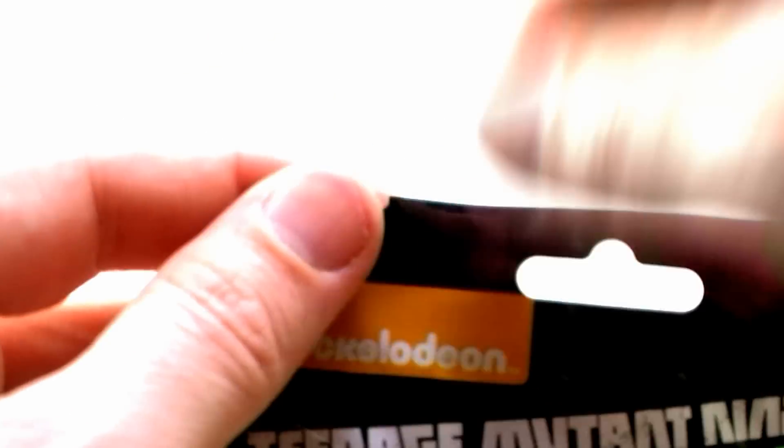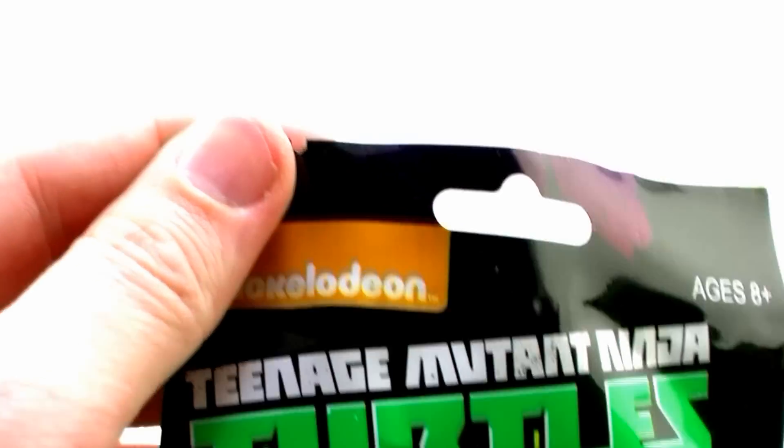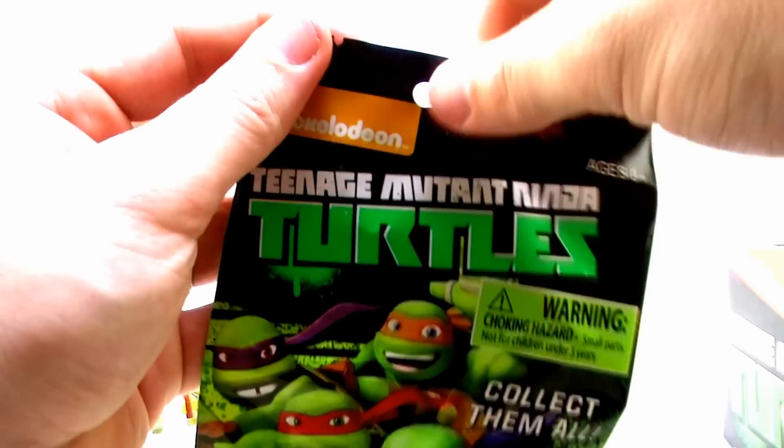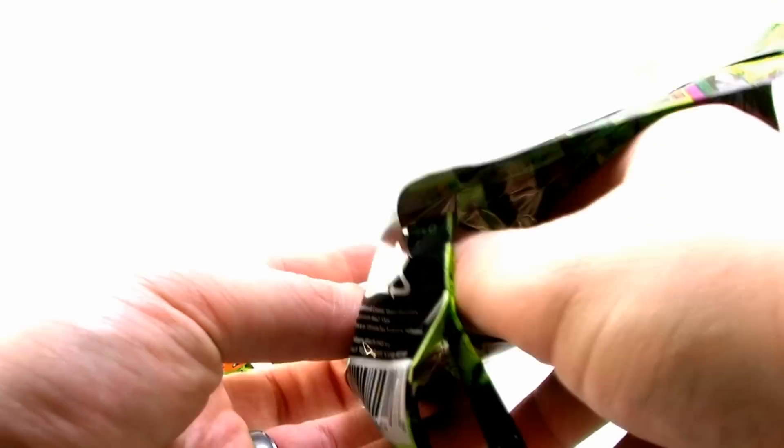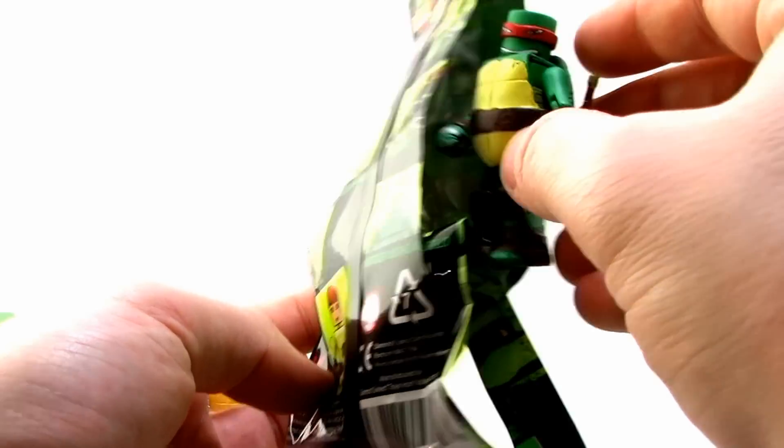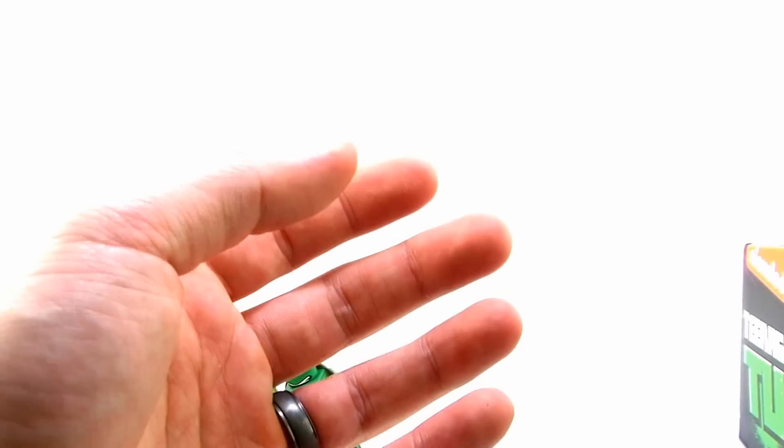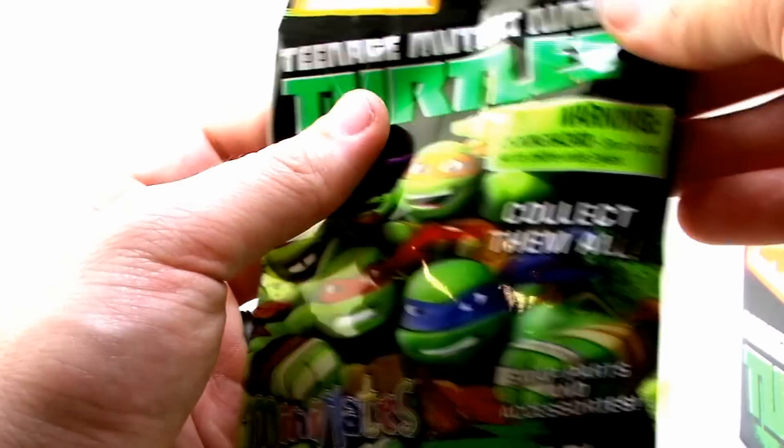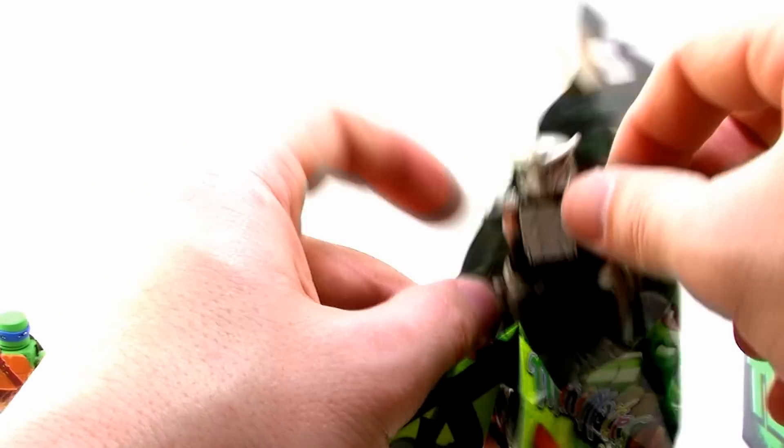So four turtles, two foot soldiers, and a translucent is what we've pulled so far. Aside from the few doubles that we've got. So here we go. Next bag opening is a double of Raphael. So we definitely have two of every figure so far. Every figure I've gotten doubles of except for the Mutagen one.